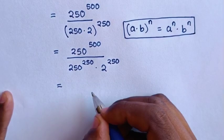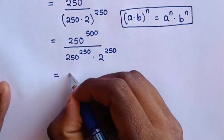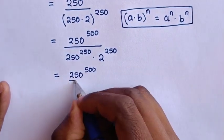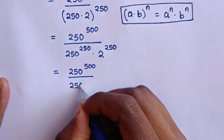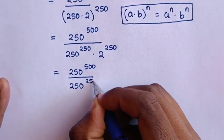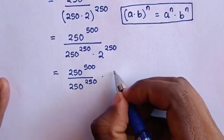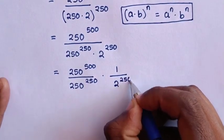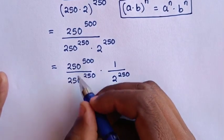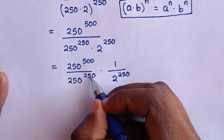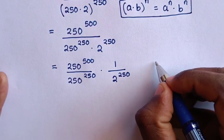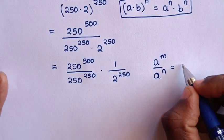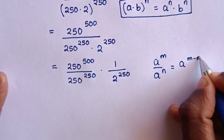This will be equal to the numerator over denominator, so 250 power of 500 over 250 power of 250, times 1 over 2 power of 250. From here, division of exponents with same base but different power, we will apply the rule a power of m over a power of n is equal to a power of m minus n.